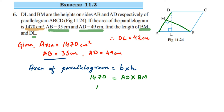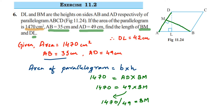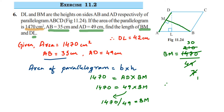Substituting: 1470 = 49 × BM. Transposing 49, we get BM = 1470 ÷ 49. Cancelling using the 7 times table: 1470 ÷ 7 = 210, then 210 ÷ 7 = 30. Therefore, BM = 30 cm.